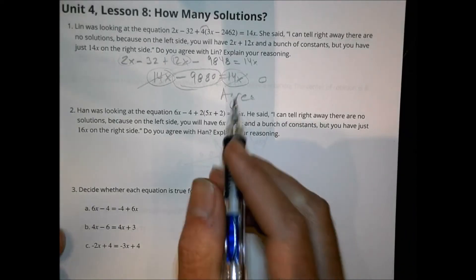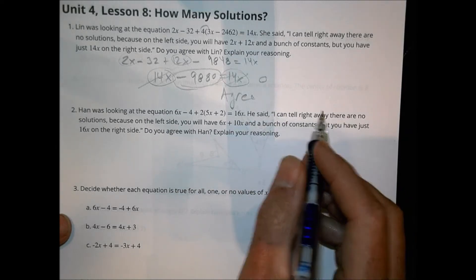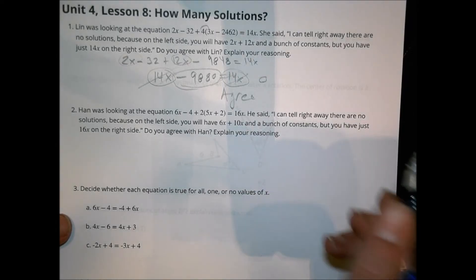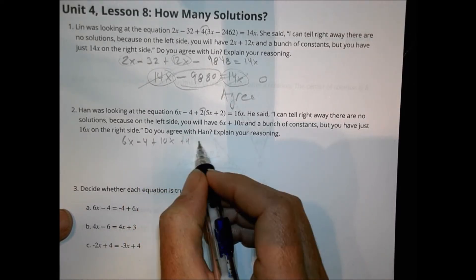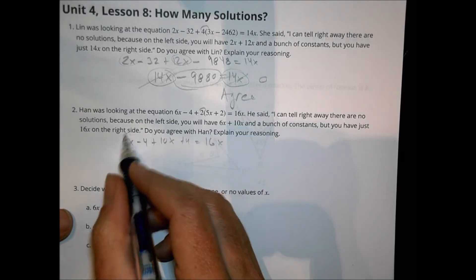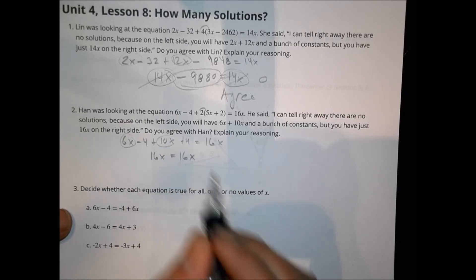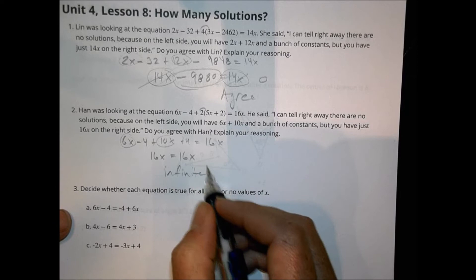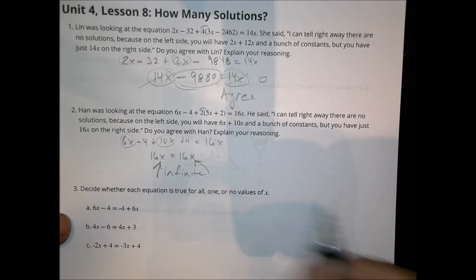Homework number 2: Han was looking at 6x minus 4 plus 2 times (5x plus 2) equals 16x and said there's no solution because the left has 6x plus 10x and constants but the right has just 16x. Let's check: distributing gives 6x minus 4 plus 10x plus 4 equals 16x. Combining gives 16x plus 0 equals 16x, so 16x equals 16x. This actually has infinite solutions — any value of x works. We disagree with Han.